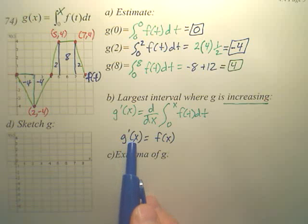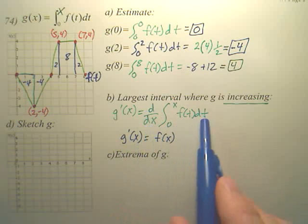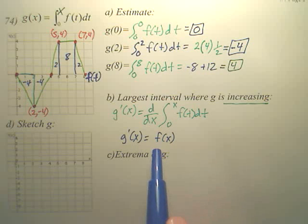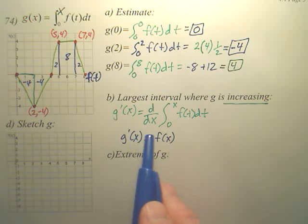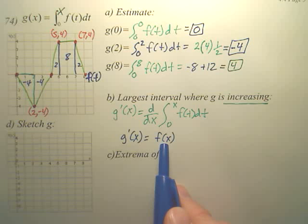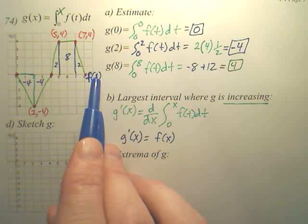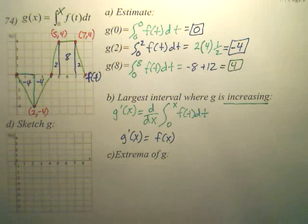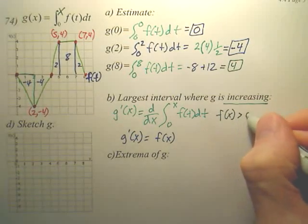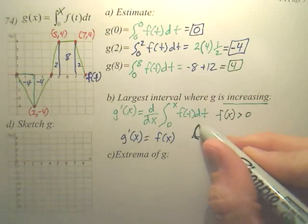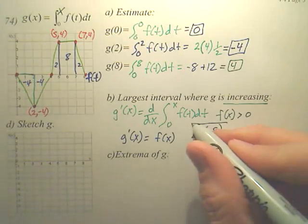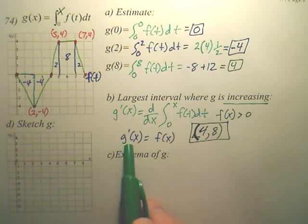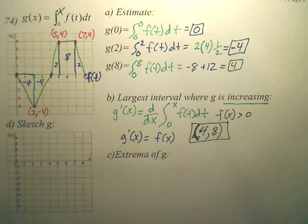So the derivative of g is basically, when you do this - it's called the second fundamental theorem of calculus - is f(x). So if I want to find where g prime is positive, isn't that basically where is f(x) positive? Can't we just look at this graph and say where is this graph positive? Where is f(x) greater than zero? Well, it would be on the open interval - doesn't that look like it's from 4 to 8? Wouldn't that be where it's increasing, where your derivatives are positive? 4 to 8.